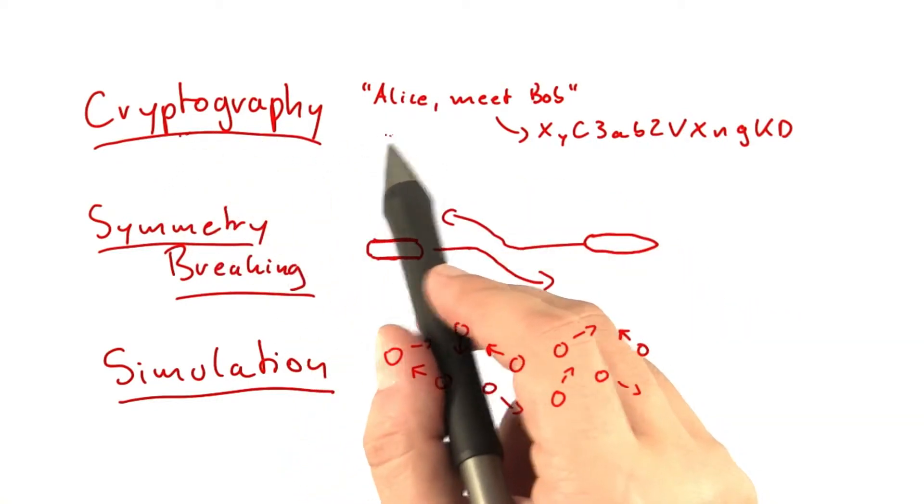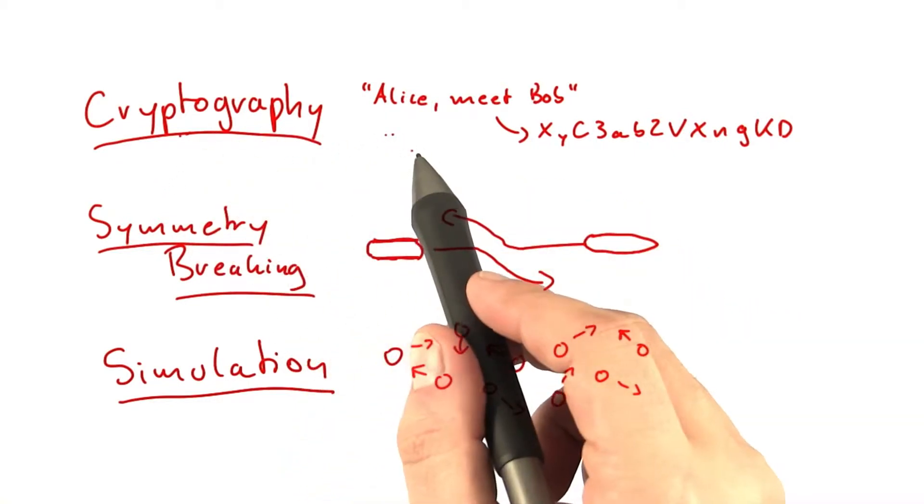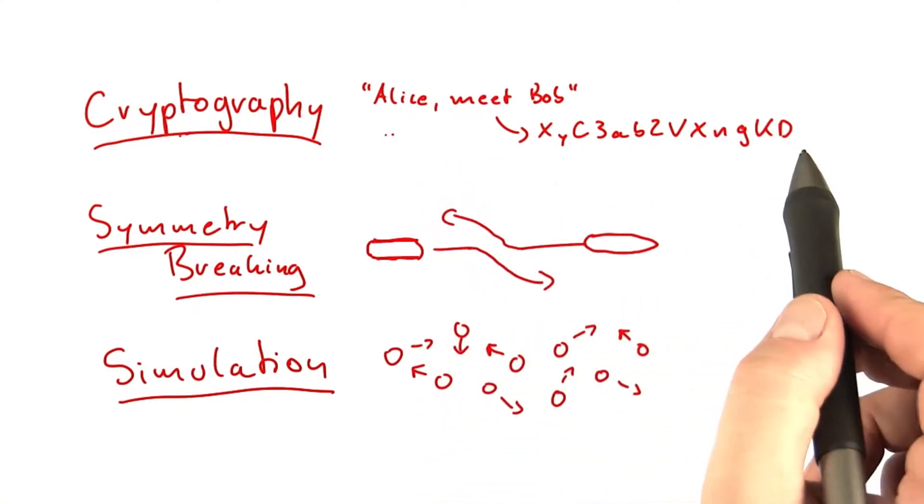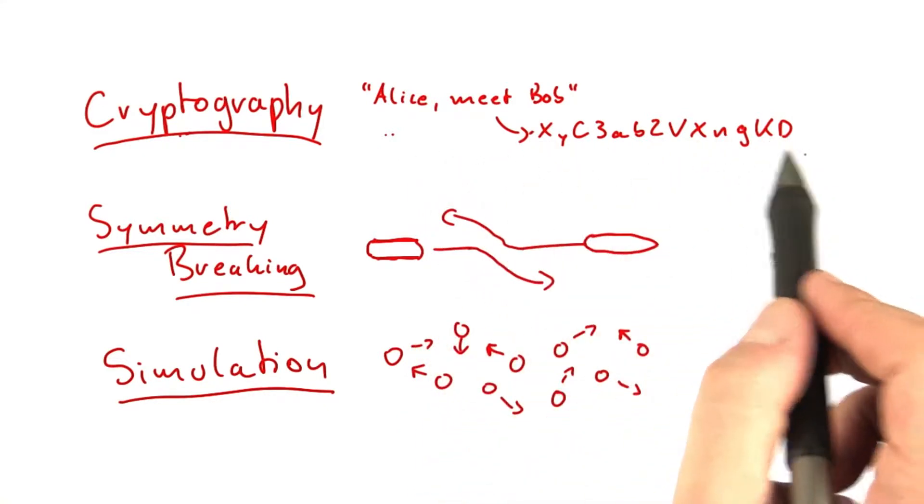You might have come across randomness for example in cryptography where randomness is in a way the only way to fully securely encode a message.